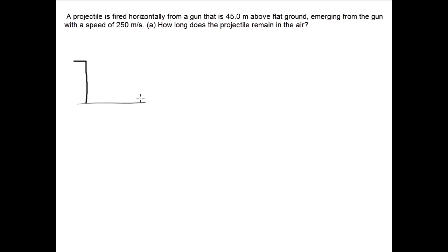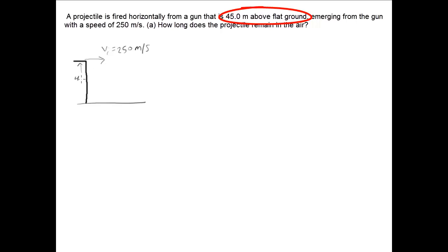So in a projectile motion question, what you want to do first is draw a picture of the scenario being described so that you have a better view of what's happening. So we have, in this case, a cliff and a projectile being fired horizontally. They say that the initial speed with which the projectile is being fired is 250 meters per second, so we can label that. They also mention that the projectile is fired 45 meters above flat ground, so we can label this as 45 meters.